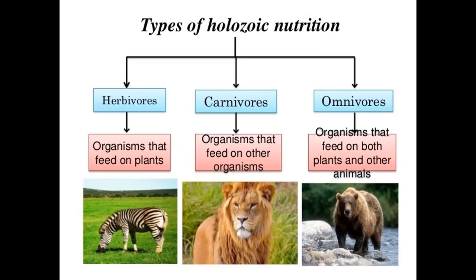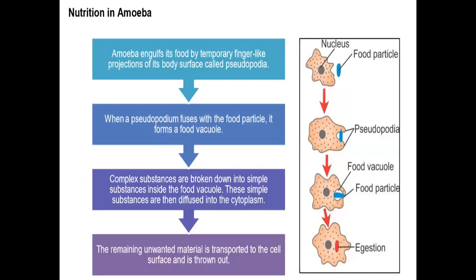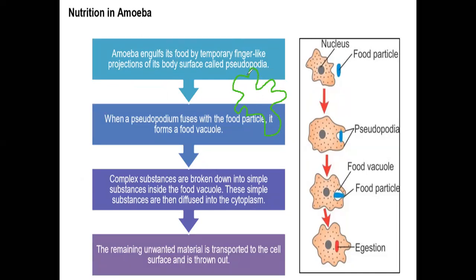Now let us talk about amoeba. Amoeba feeds by temporary finger-like projections of its body surface called pseudopodium. There is no fixed shape of the amoeba because it is a unicellular eukaryotic protozoan. It has no cell wall, and the cell membrane is flexible.